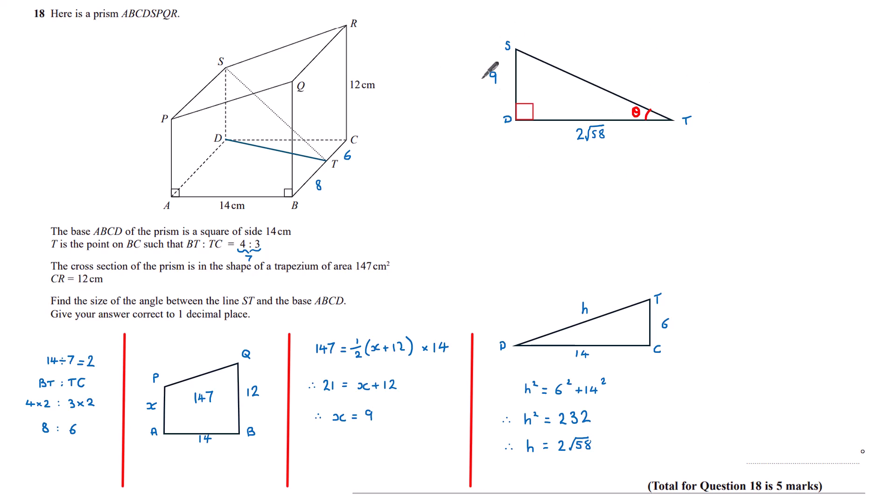I now have a right-angled triangle where I know two of the sides, and I just want to find the angle. I have opposite to the angle and adjacent to the angle, which means I'm looking at TOA. So tan theta is equal to the opposite, 9 divided by the adjacent, which is 2 root 58.